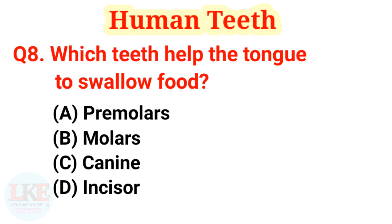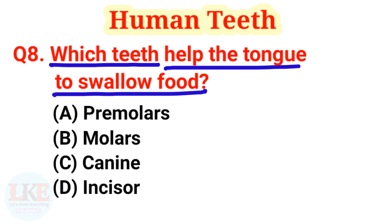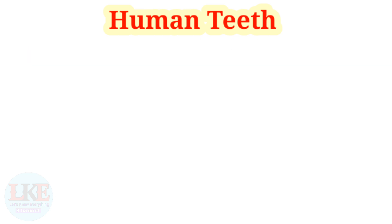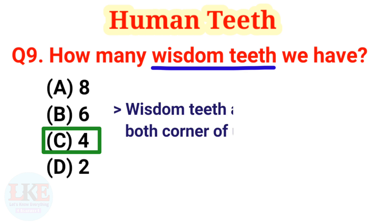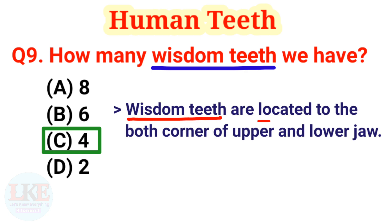Question number 8: which teeth help the tongue to swallow food? Options: A) premolars, B) molars, C) canines, D) incisors. The right answer is option B, molars. Our molar teeth break up food into smaller pieces to make it easier to swallow. Question number 9: how many wisdom teeth do we have? We have a total of 4 wisdom teeth — 2 in the upper jaw and 2 in the lower jaw. Wisdom teeth are located at both corners of the upper and lower jaw.